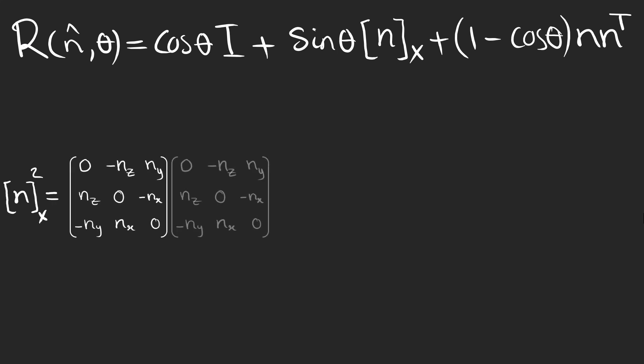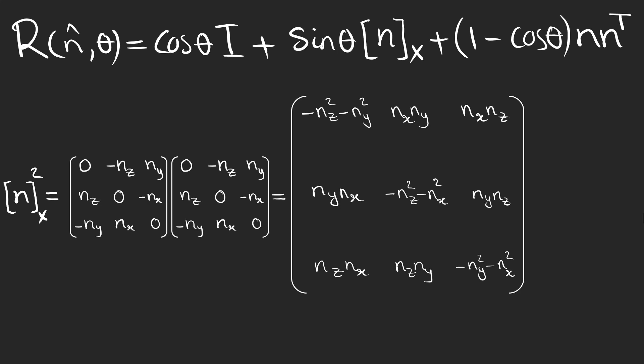Interestingly, if we multiply the square matrix in the middle by itself, we come up with this matrix. We know that the sum of squares of the components of the unit vector n is 1 because it is a unit vector. So the elements on the diagonal of this matrix can be written in this form. And we have found a relationship between the two square matrices we derived earlier.